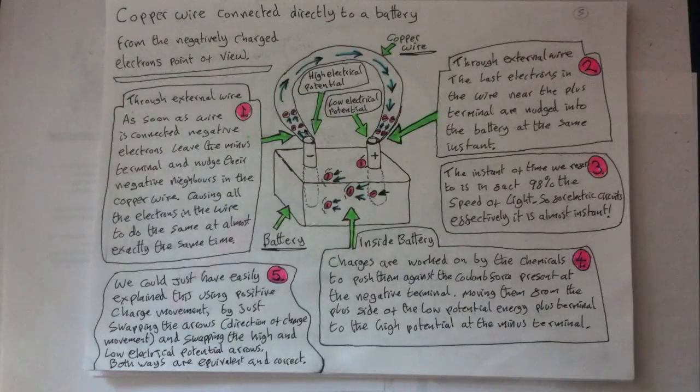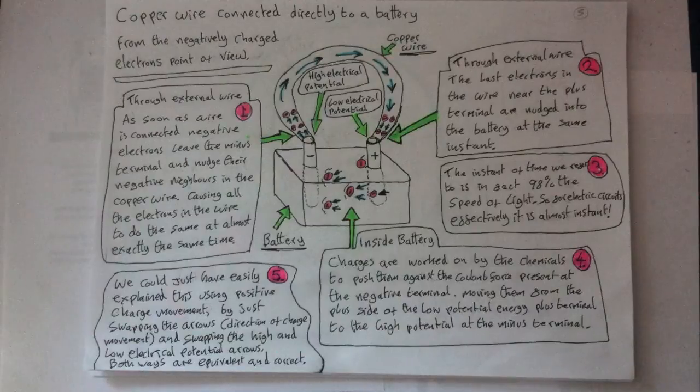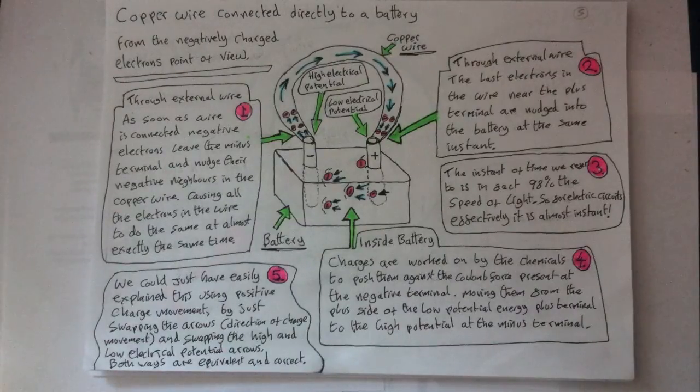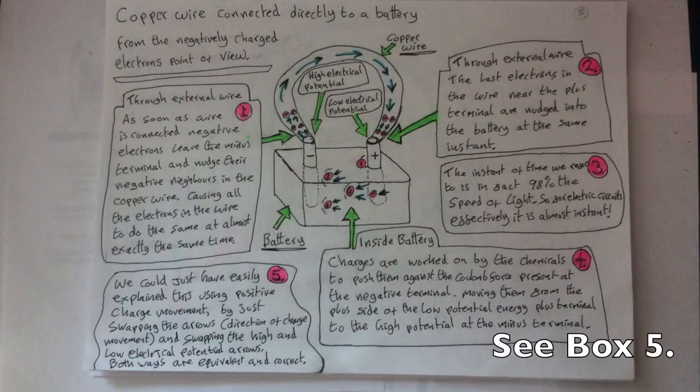For each complete cycle between the terminals of a battery, all the initial potential energy given out by the battery per charge is used up, expended within the wires and components of the circuit.